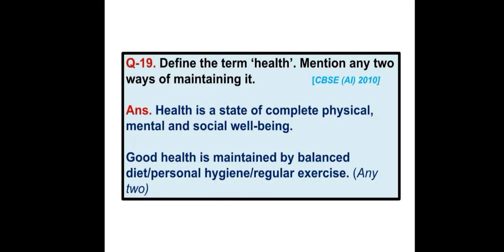Define the term health and mention any two ways of maintaining it. Health is a state of complete physical, mental and social well-being. Health can be maintained by balanced diet, personal hygiene, and regular exercise.